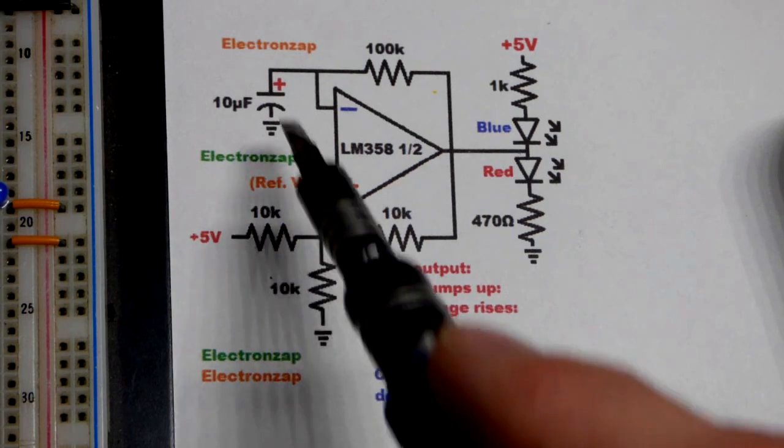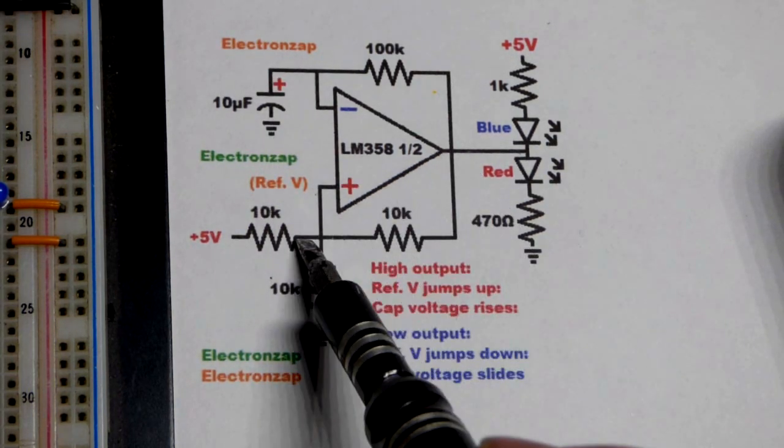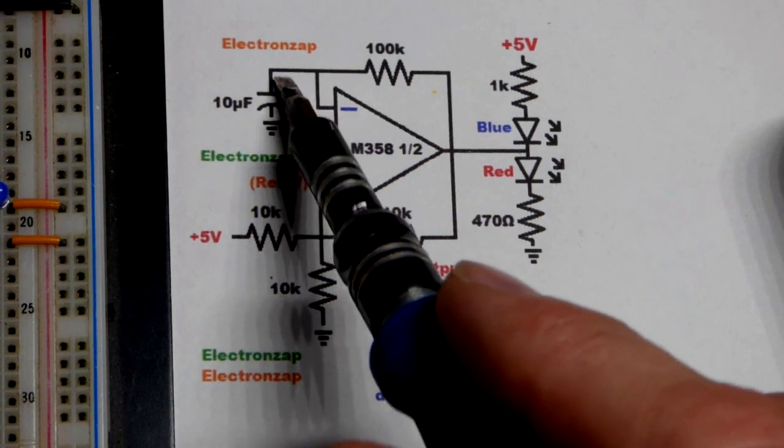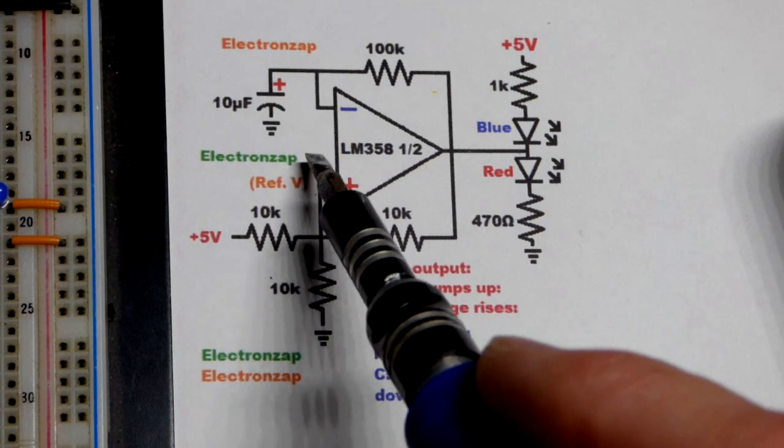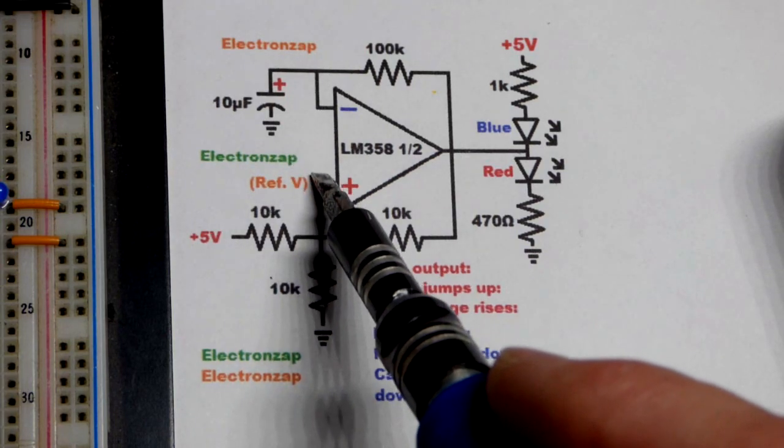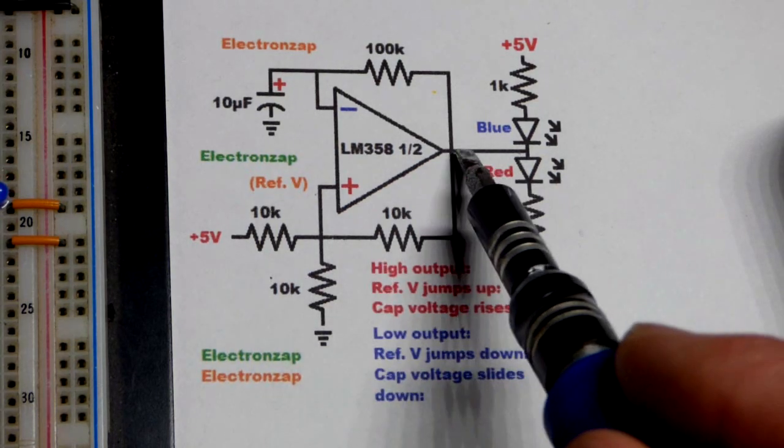At the same time we have a capacitor. Let's say the output's high, it bumps up the voltage here a bit and the capacitor starts charging right there. Its voltage goes up. Once it gets as high as the voltage we set here, then the output goes low.